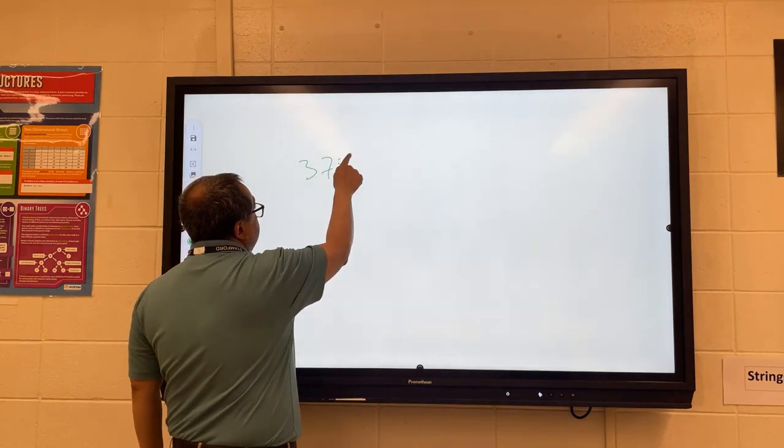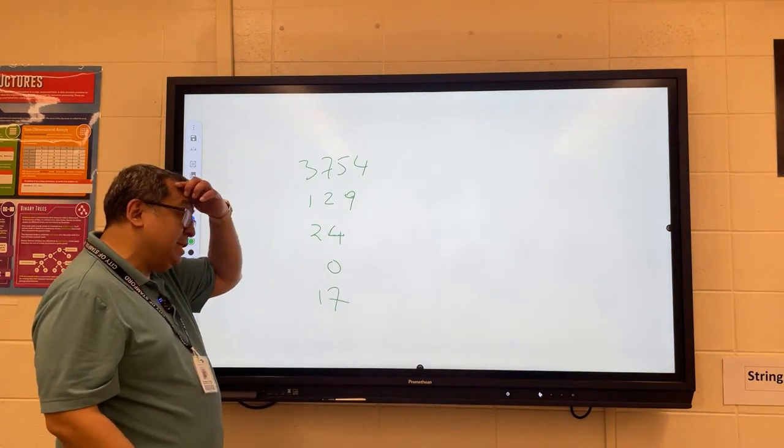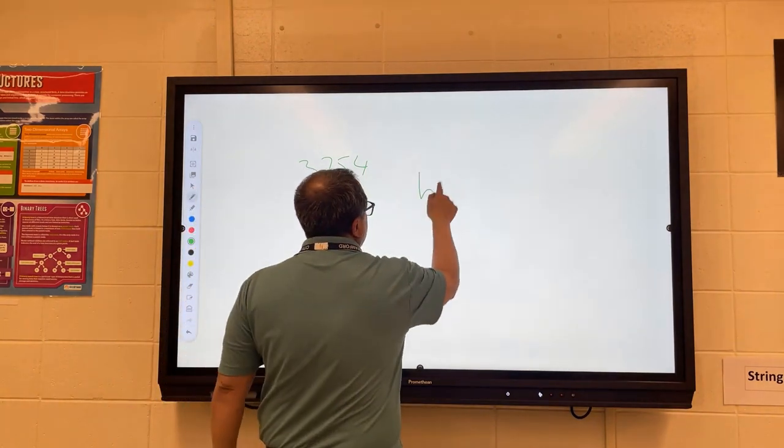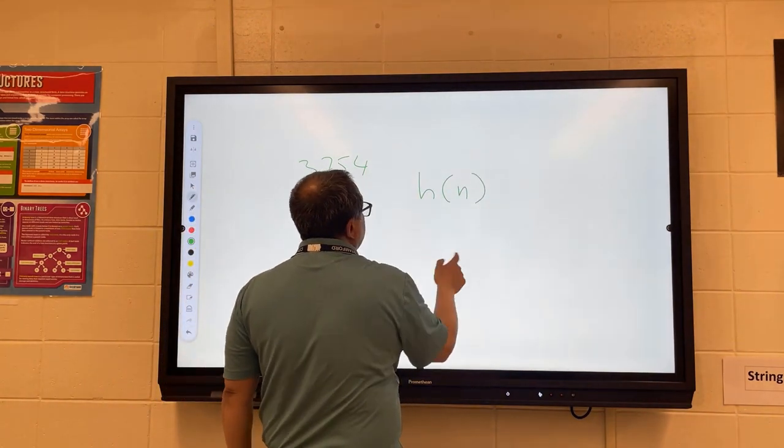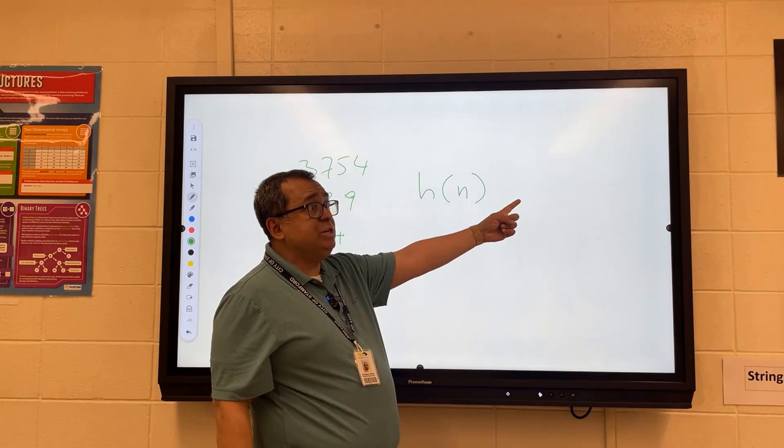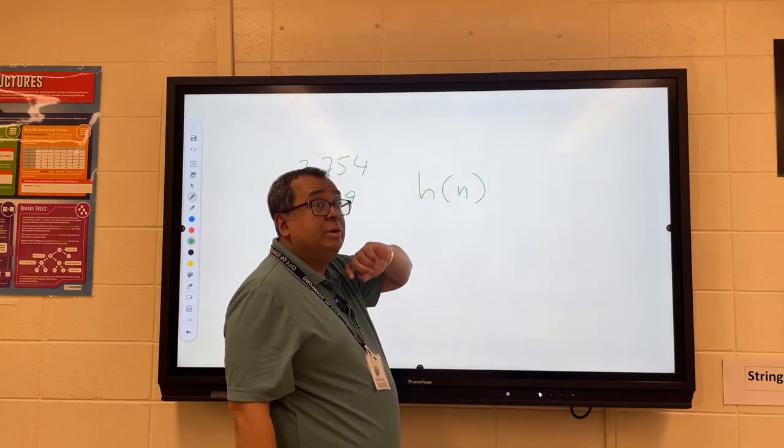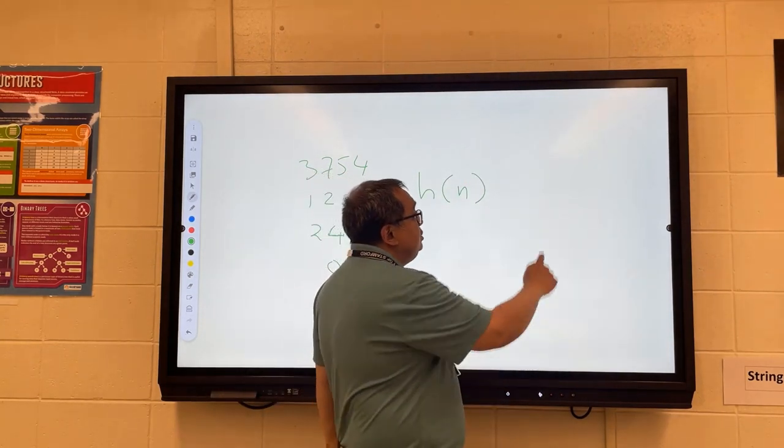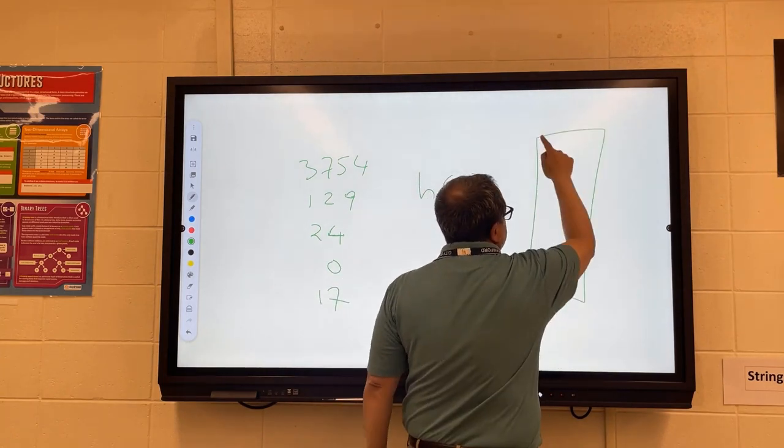I'll just make some up here. Here's some numbers. We want to pass them through some hash function. We'll call it hash of n, and what this will do is it will generate a hash code. That hash code would generate an index into an array, and so we have this array here. Maybe this array holds like 10 elements or something like that.